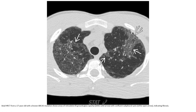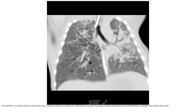HRCT of a 17-year-old known case of ABCA3 mutation showing areas of interlobular septal thickening and septal thickening, plus multiple cysts.